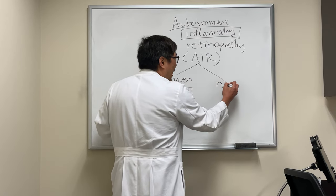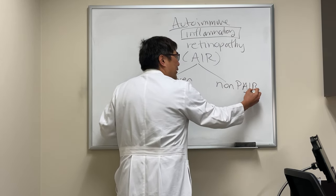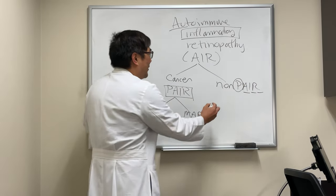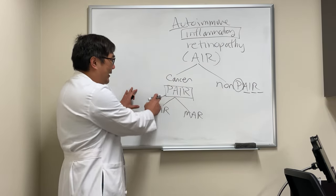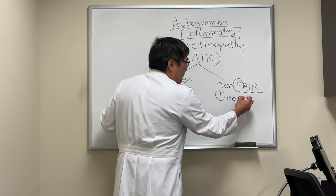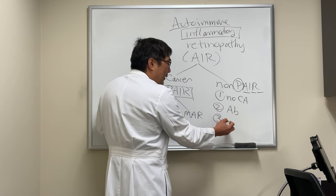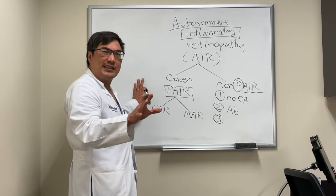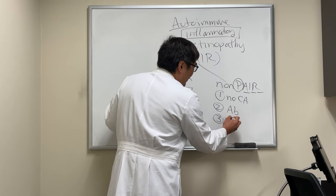On the other side is the non-PAR. It's still autoimmune inflammatory retinopathy, but it's not from cancer. To make the diagnosis of non-PAR, you have to make sure it's not PAR — meaning no cancer, you must have the antibodies, no other diagnosis, and it can't be inflammatory or degenerative retinal disease from another cause. So it's kind of a diagnosis of exclusion.